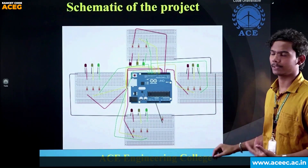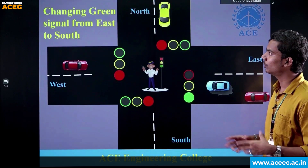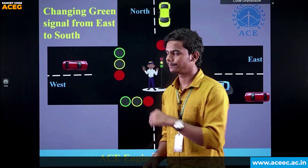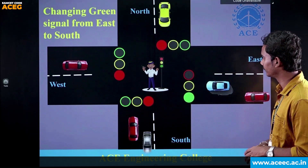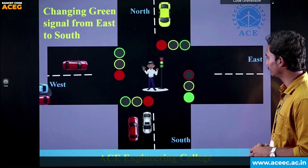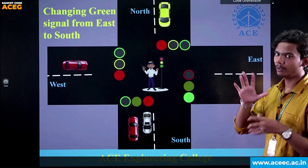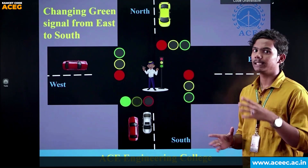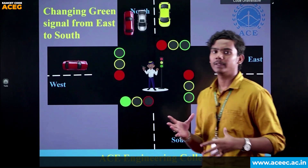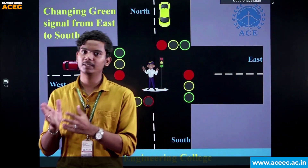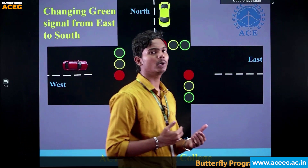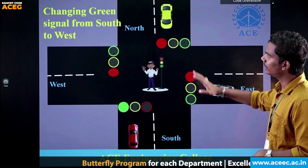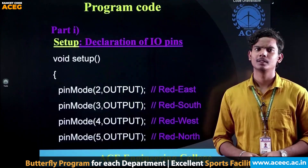This is the schematic of the project. Now let's observe the changing of the green signal from east to south. You can clearly see the blinking of the yellow color, which indicates that the signal is about to change from one direction to another. When transitioning between junctions, the yellow light blinks.